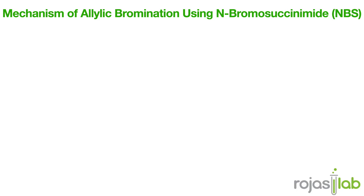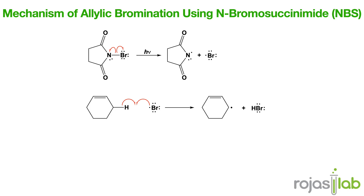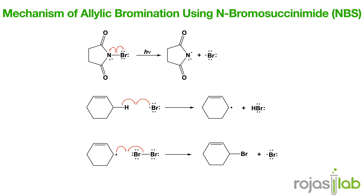Let's talk about allylic bromination with NBS. NBS stands for N-bromosuccinimide, and this reaction is a radical bromination selective for allylic or benzylic positions. The mechanism begins with radical initiation by light or peroxides. The NBS molecule generates a bromine radical, and from here the allylic hydrogen can be abstracted to form an allylic radical. This is resonance stabilized, which is why this reaction is favored. From here, the radical reacts with NBS to form an allylic bromide. Key points: it always maintains the double bond, and it's selective for allylic sites.